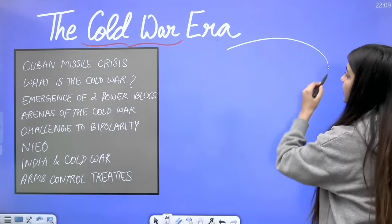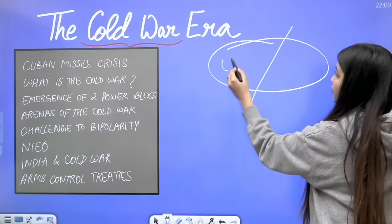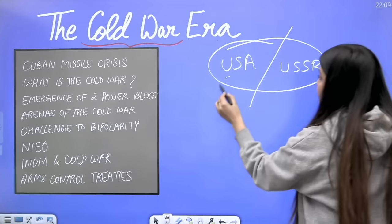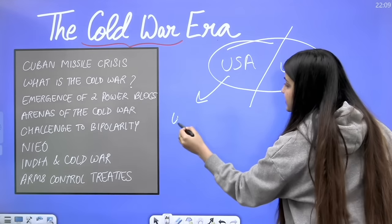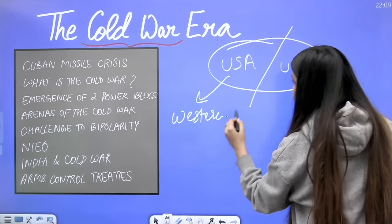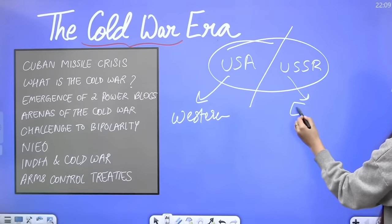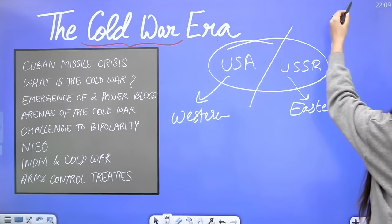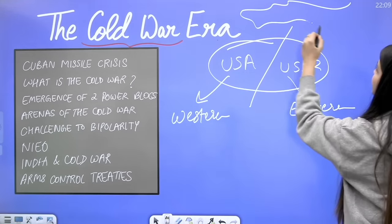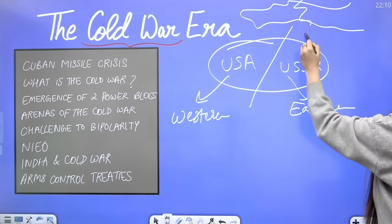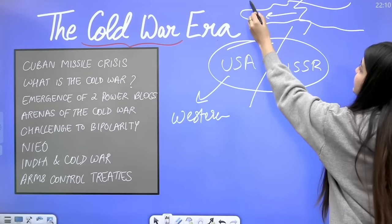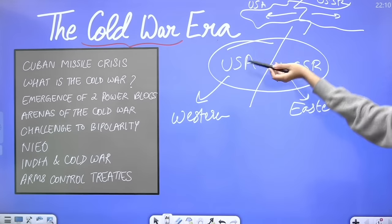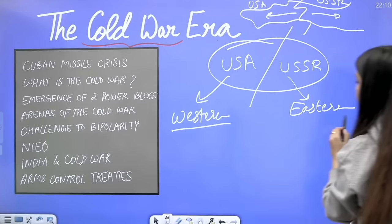The world was divided into two alliances — one of USA and the other of USSR. USA's alliance is called the Western Alliance and USSR's alliance is called the Eastern Alliance. This is because the first arena of the Cold War was Europe. West Europe became USA's alliance and East Europe became USSR's alliance — that is why they were called Western Alliance and Eastern Alliance.